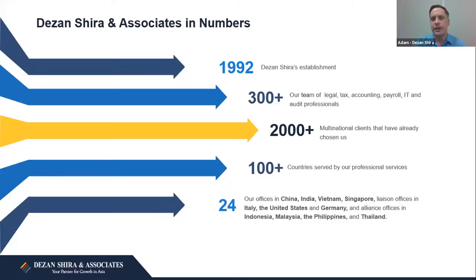A little bit about our company, Dezan Shira & Associates, established in 1992. We have around 300 employees in our team, focusing on various areas relating to compliance advisory across a broad scope. We help foreign companies enter Asian markets. We have around 2,000 multinational clients from all countries. We have 24 offices, including one in Singapore, so we're well positioned to help Singapore companies going into not only China, but especially India, Vietnam, and other ASEAN countries.